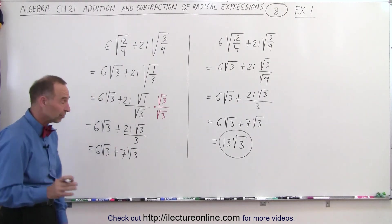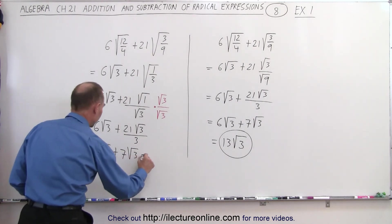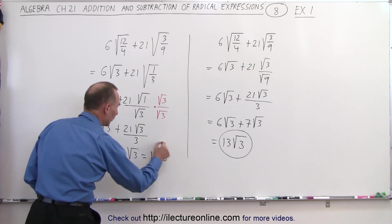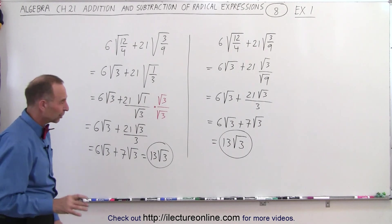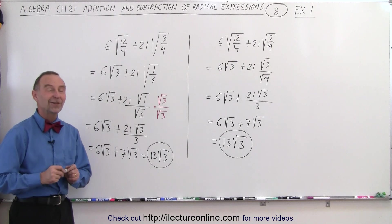And now we can see that the two expressions are like, because they have the same radical. So this equals 6 plus 7, or 13 times the square root of 3. So as you can see, there's multiple ways in which we can do this. And that is how it's done.